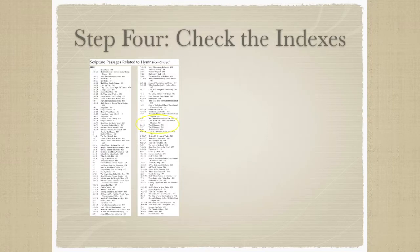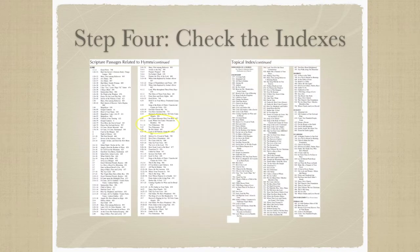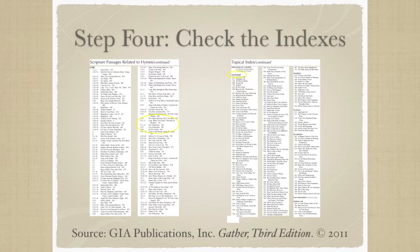The second resource in this step is similar to the scriptural index, but instead of listing hymns for scripture verse reference, it catalogs songs through their thematic material. Here is where the topics that emerged in prayer come into play from Step 3. Our example of a topical index is derived from GIA's Gather 3rd Edition. Keeping with the same gospel example, where Jesus calls the first disciples, we can examine the discipleship list in the topical index to see if any hymns correspond with what arose for us as we prayed the readings.